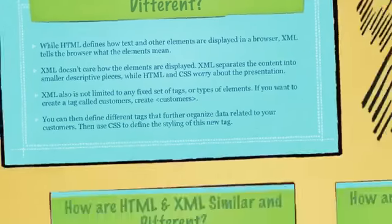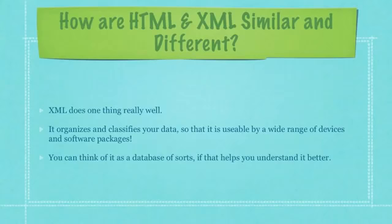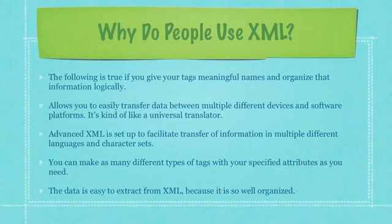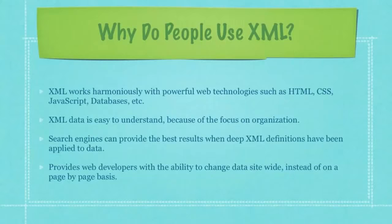You can then define different tags that further organize data related to your customers, then use CSS to define the styling of this new tag. XML does one thing really well: it organizes and classifies your data so that it is usable by a wide range of devices and software packages. You can think of it as a database of sorts if that helps you understand it better. XML will allow you to easily transfer data between multiple different devices and software platforms.